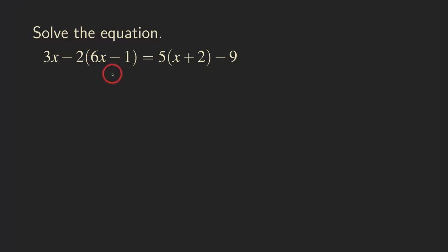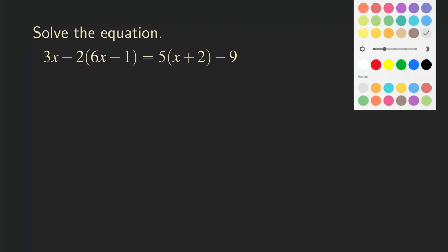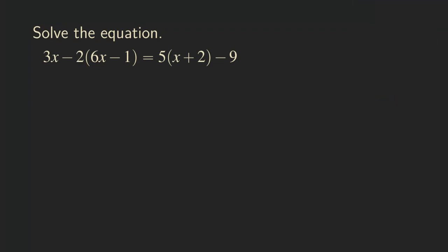So let's do it by distributing the numbers in front of the parentheses if there are numbers other than 1. We are going to distribute this negative 2 to the 6 and then also to the negative 1. So we are going to get negative 2 times 6x, and then negative 2 times negative 1.